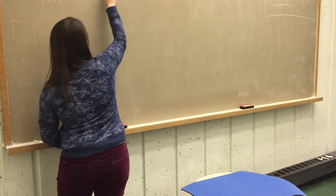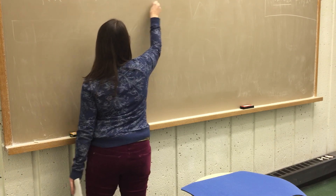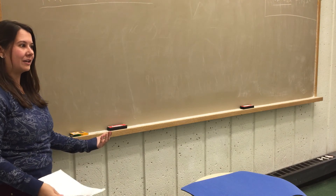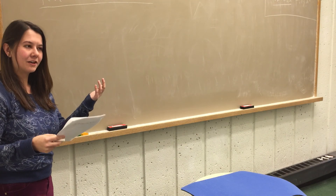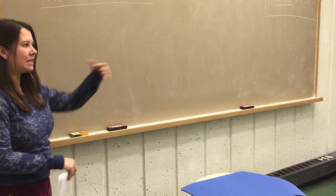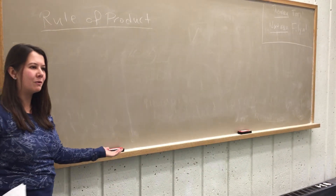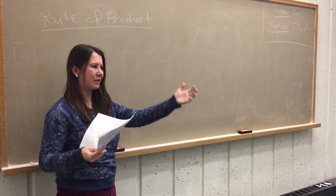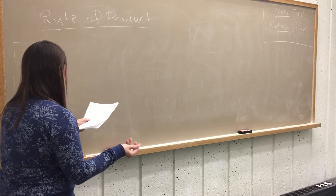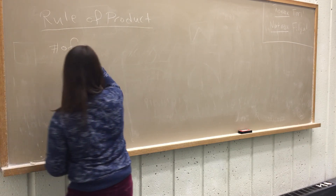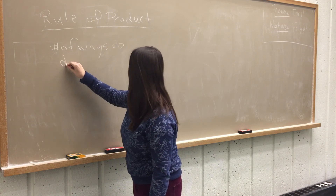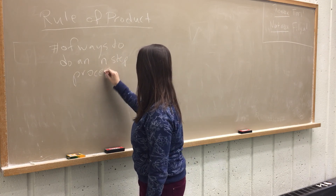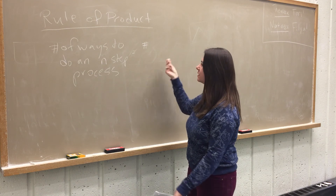Let's start with this. The rule of product — not to be confused with the product rule of calculus — also known as the fundamental principle of counting, is the idea that if there are A ways to do one thing and B ways to do another thing, then there are A times B ways of doing both things. More generally, if you want to know the number of ways to do an n-step process, you just take the product of the number of ways to do each step.